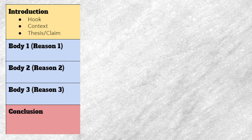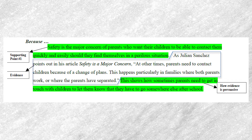While none of those are foolproof reasons, they're pretty common arguments from the side against cell phones in schools. Now, I want to look at both sides of this argument. If we go back to our examples from last week, we saw someone writing an argumentative essay with the opposite opinion — that cell phones should be allowed in schools. In their first reason, they start out by saying that safety is the major concern of parents who want their children to be able to contact them quickly and easily should they find themselves in a perilous situation. So their first point is that cell phones are good to have for safety reasons.